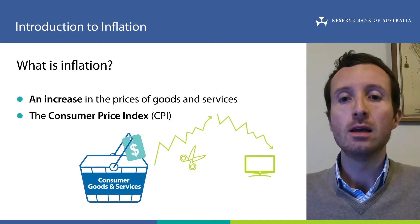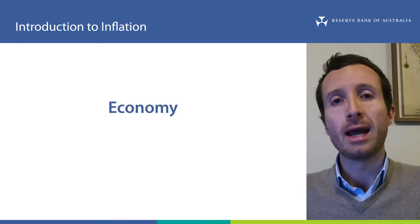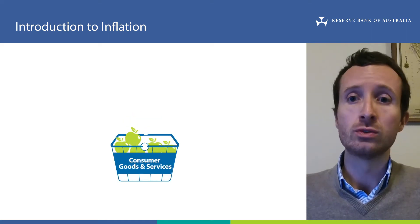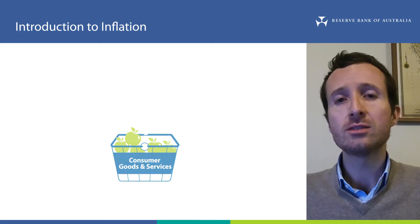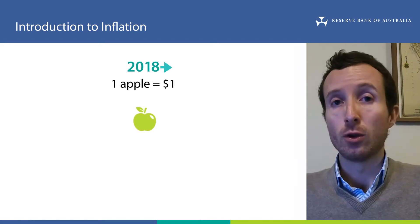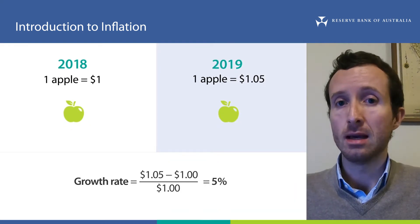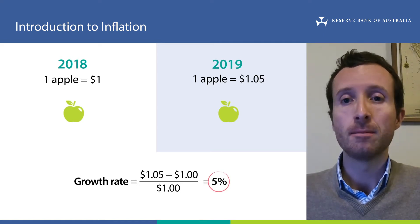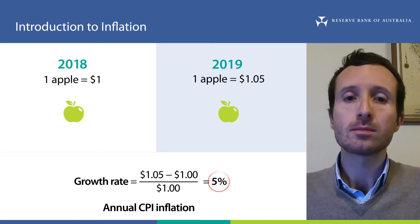Let's take a step back and start with a simple example before talking about inflation in Australia. Imagine an economy where households only buy one good: apples. In this case, the basket of goods and services used to calculate CPI only includes this one good, so our calculation becomes quite simple. Let's assume that in 2018 the price of an apple was $1. By the following year, in 2019, the price had increased to $1.05. Using these numbers, we get a growth rate of 5% — that is to say, in our simple economy, annual CPI inflation was 5%.